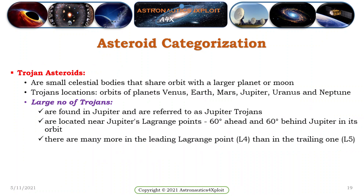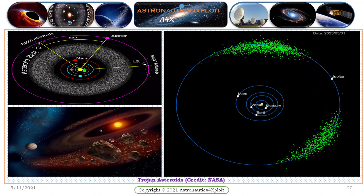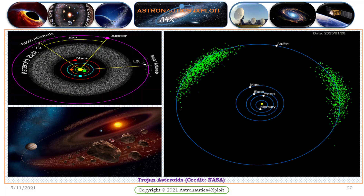Trojan asteroids are small celestial bodies that share orbits with a larger planet or moon. Trojan locations exist in the orbits of planets Venus, Earth, Mars, Jupiter, Uranus, and Neptune. A large number of Trojans are found near Jupiter and are therefore defined as Jupiter Trojans. They are located near Jupiter's Lagrange points, 60 degrees ahead and 60 degrees behind Jupiter in its orbit. There are many more in the leading Lagrange point L4 than in the trailing one.